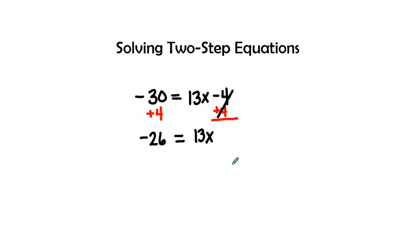The next step we need to see is the 13 is attached to the x. How is it attached? It's with multiplication. So the inverse operation of multiplication is division. And so we're going to divide both sides by 13.